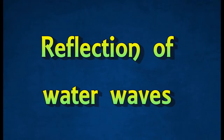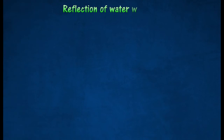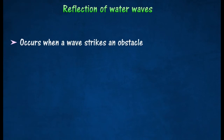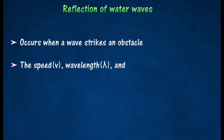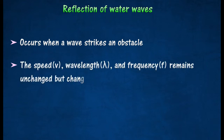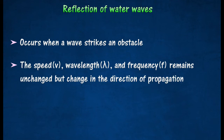Reflection of water waves occurs when a wave strikes an obstacle. The speed of reflected waves remains unchanged and is equal to the speed of the incident waves. The direction of propagation changed.